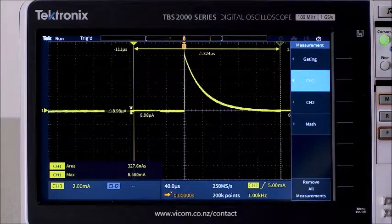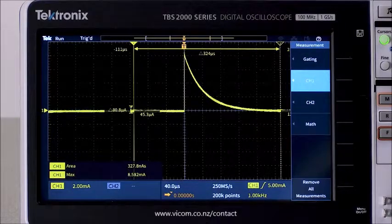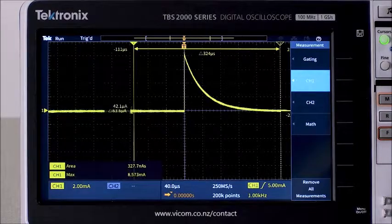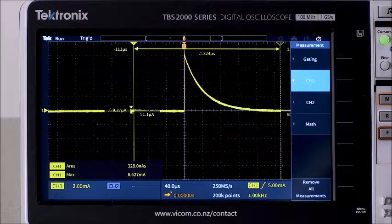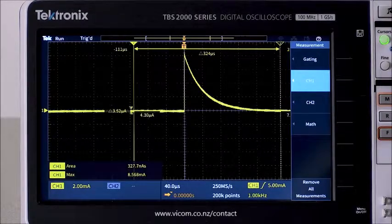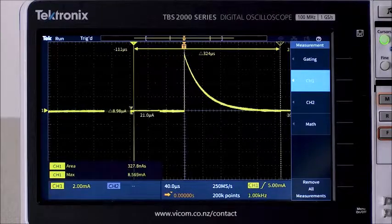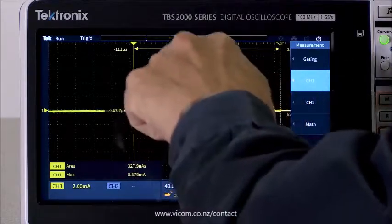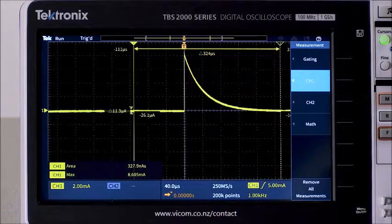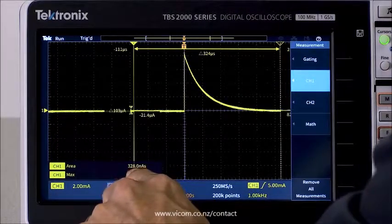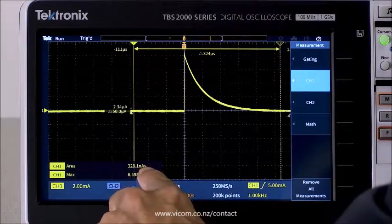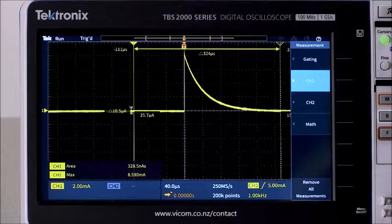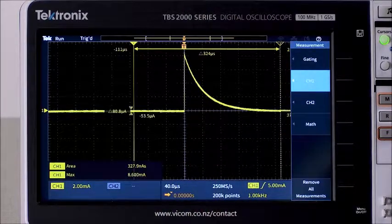I'll also turn on the max measurement, just for reference. As you might remember from physics class, the charge stored on a capacitor is simply capacitance times voltage. So we would expect the charge to be about 0.33 microfarads times 1 volt, which equals 330 nanocoulombs. The area measurement integrates to the area underneath the curve. And it shows about 330 nanoamp seconds, which is equivalent to about 330 nanocoulombs. So thankfully, the laws of physics have been proven once again.